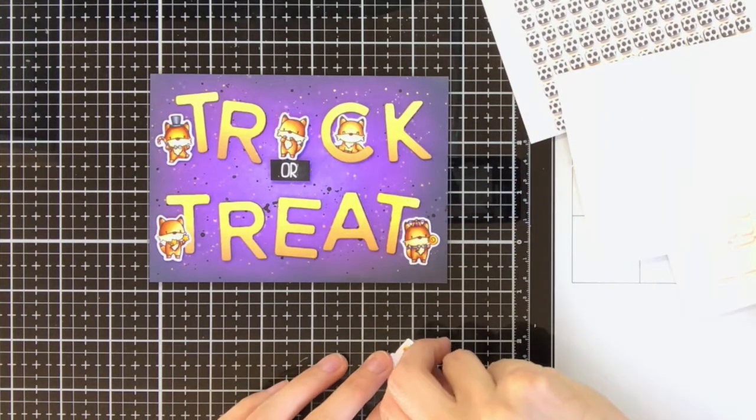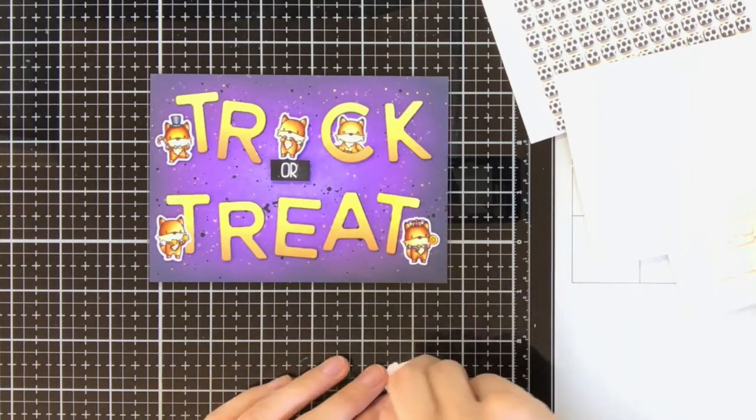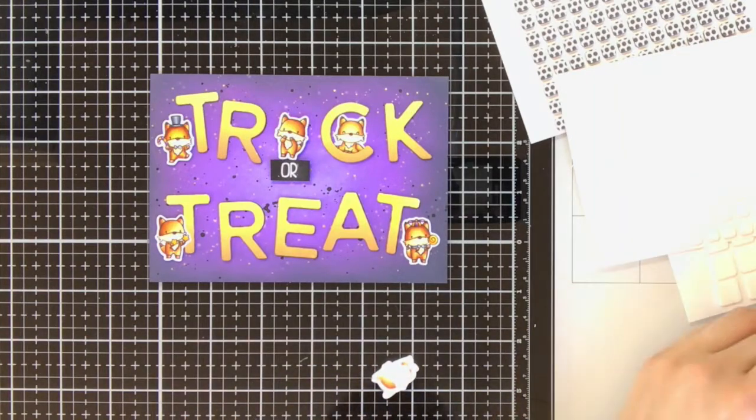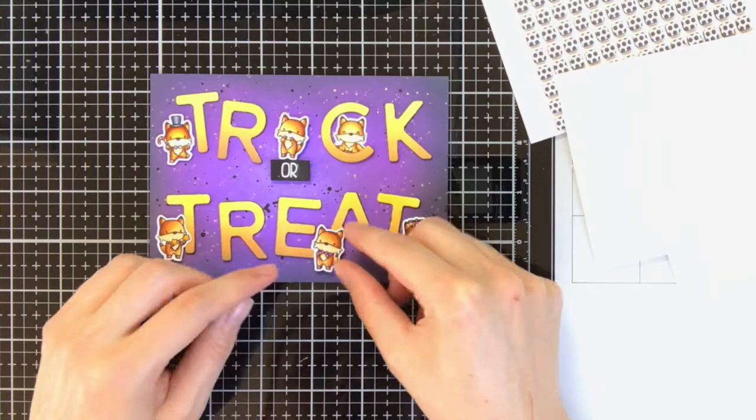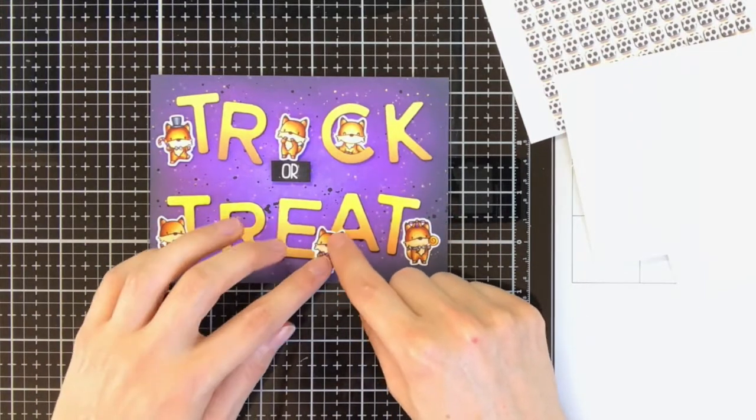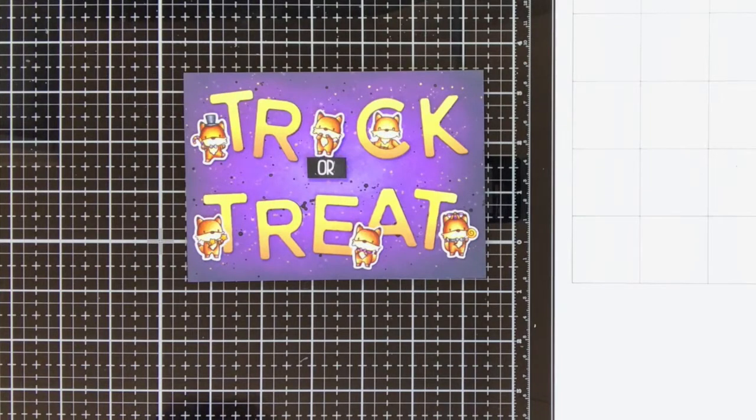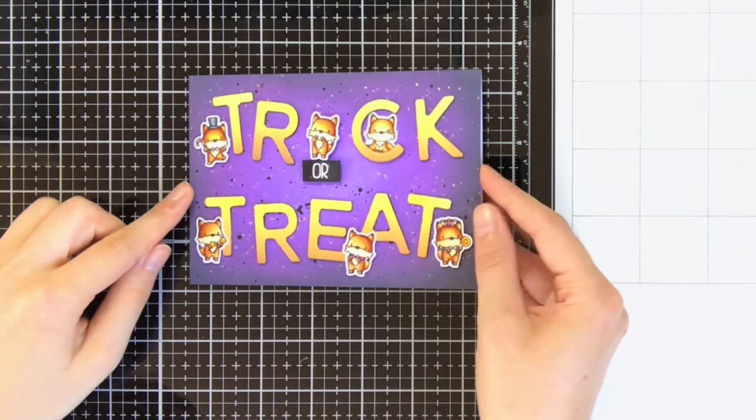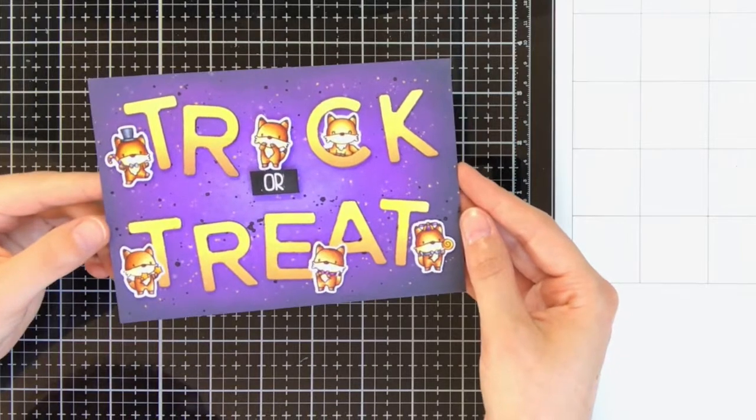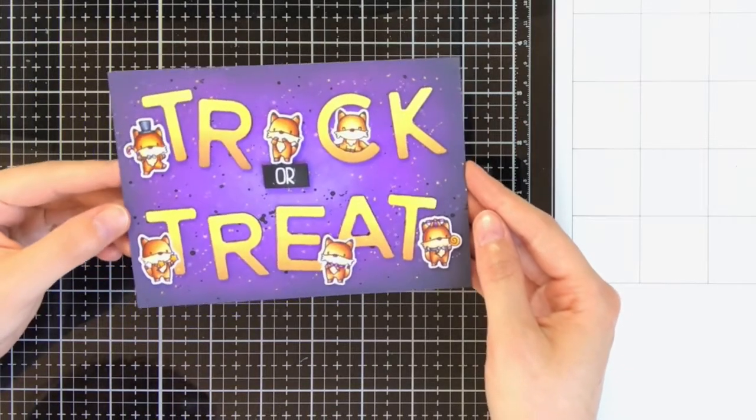To make everything look as a whole and coherent, I am also making the critters interact with the letters. As you can see, for that letter C for instance, I put the little fox inside the letter C. Also the foxes with the letter T and A are overlapping with the sentiment. This really helps with making it look as a whole.